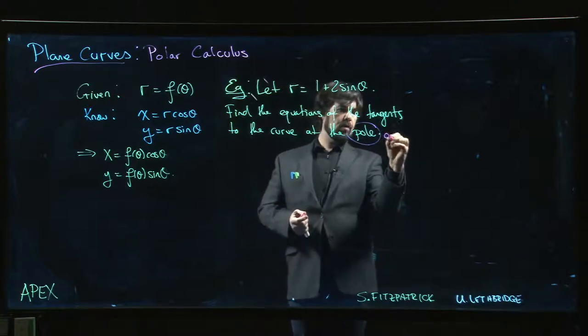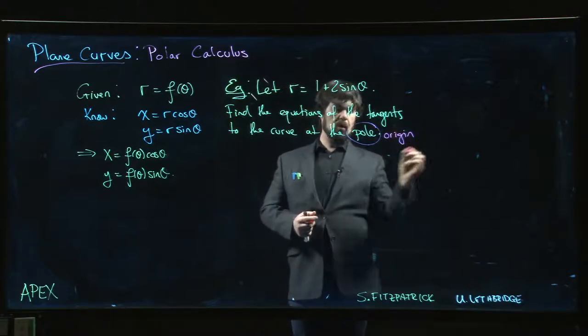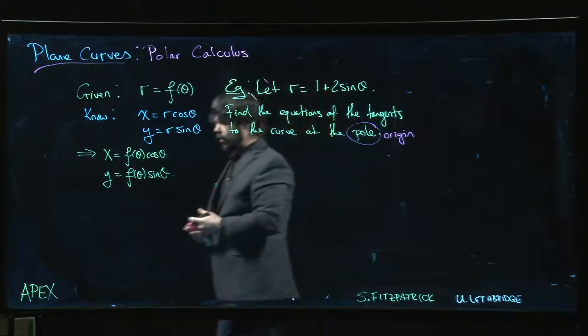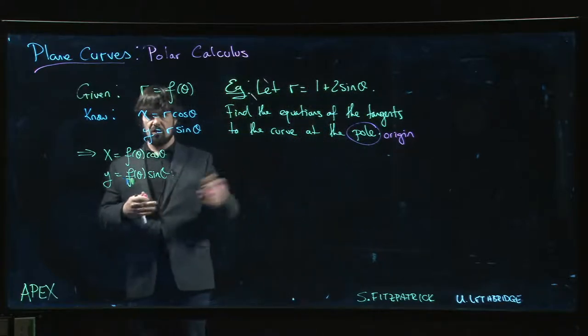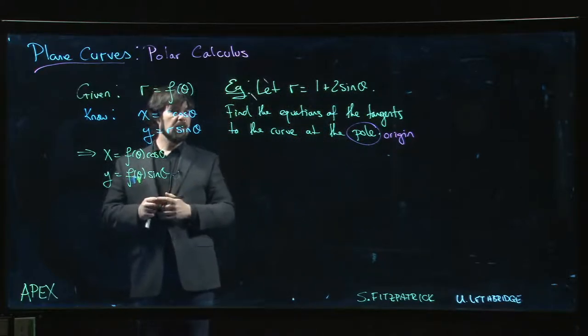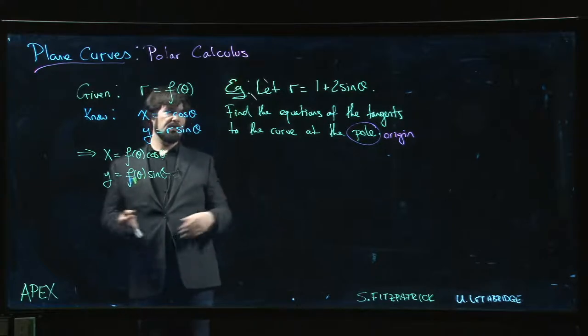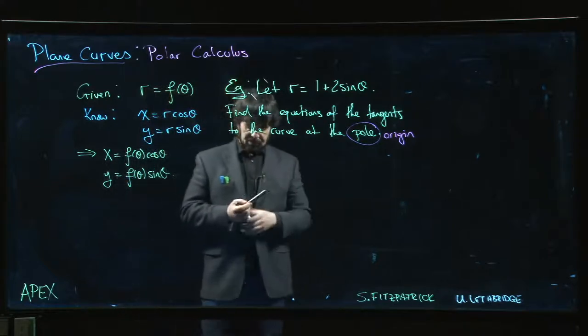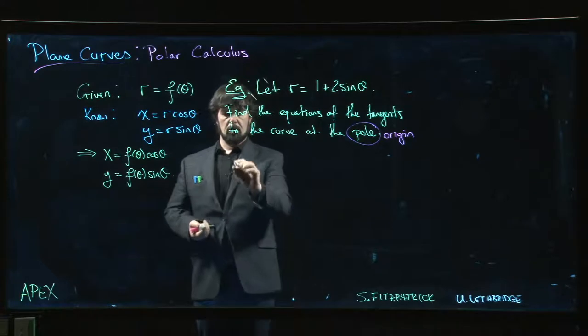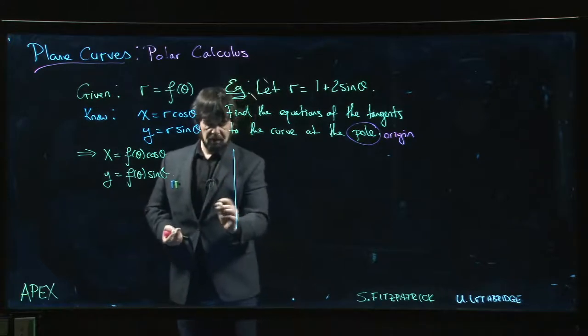Now, pole just refers to the origin. The pole in polar coordinates is the origin, that's where we measure all of our distances from. It's also where we measure our angles from. The pole, the origin, plays a central role in the polar coordinate system, as it does in rectangular.